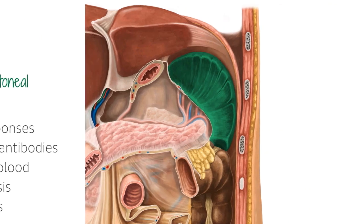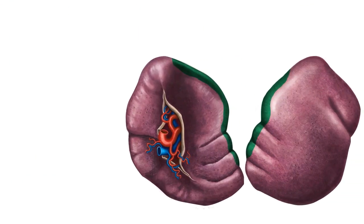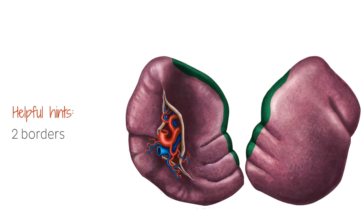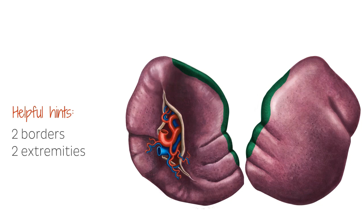Now in order to help you remember the macroscopic anatomy of the spleen, I have here a few helpful hints. The spleen has two borders — a superior and an inferior one — two extremities, an anterior and a posterior extremity, and two surfaces that I showed you before: a visceral one and a diaphragmatic surface.